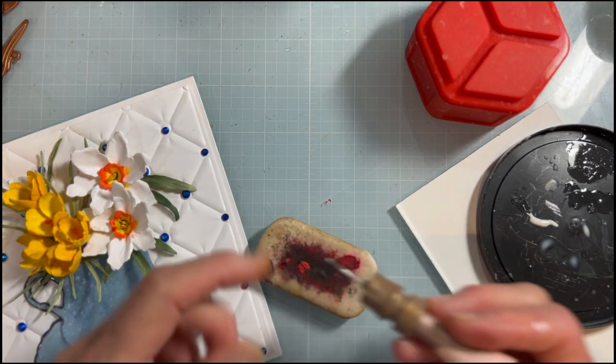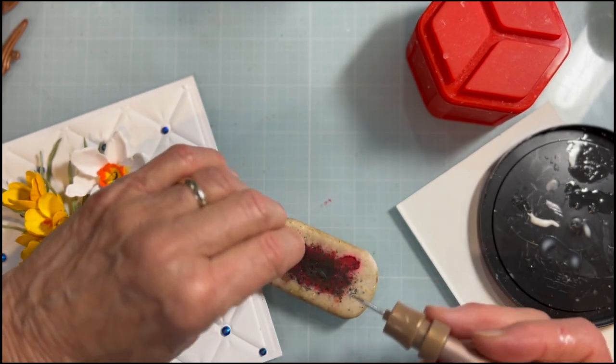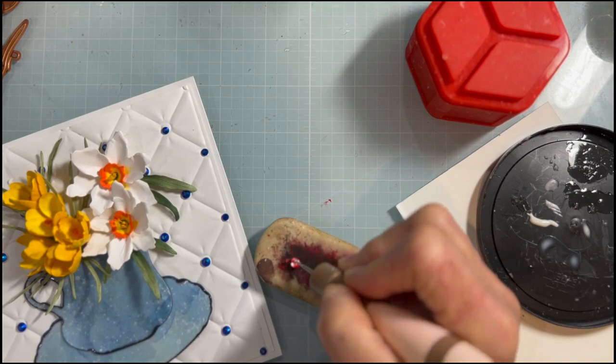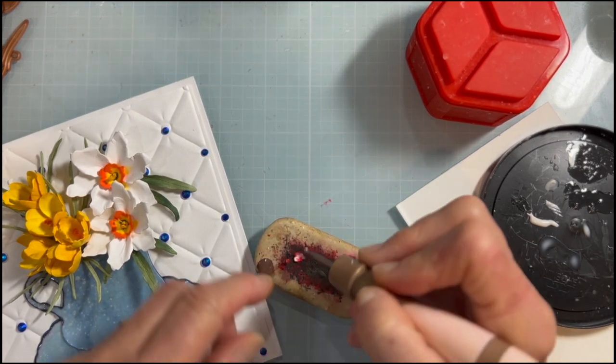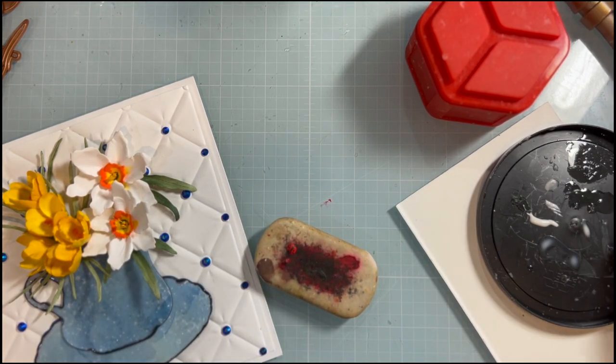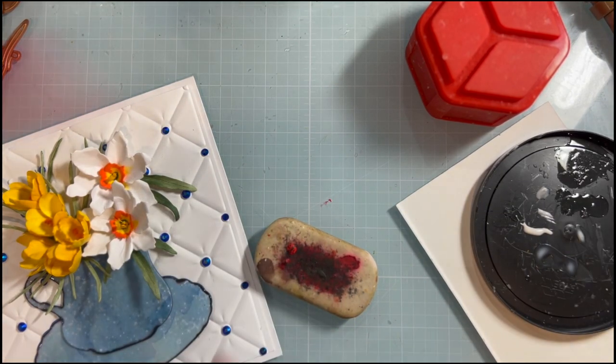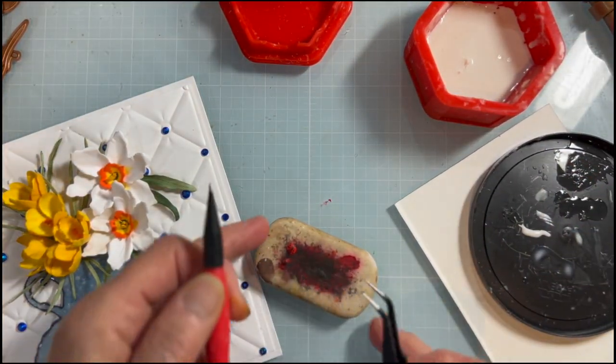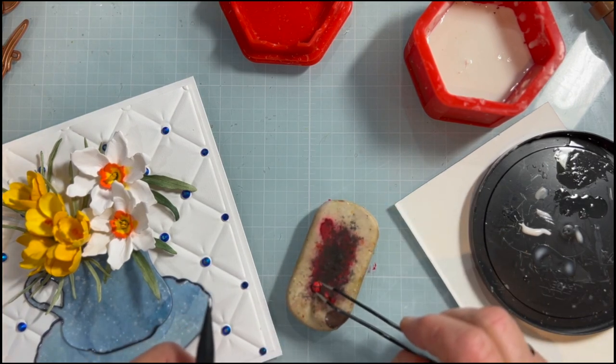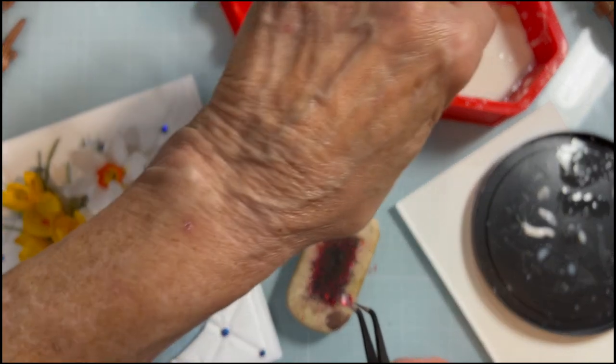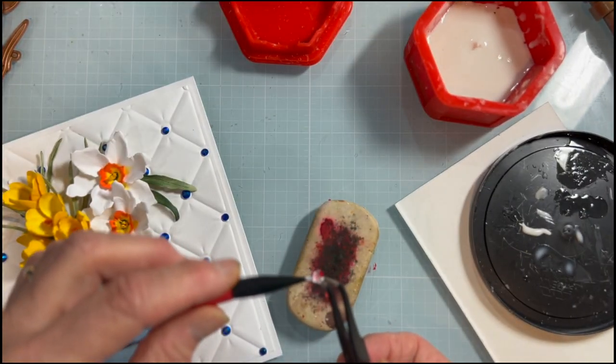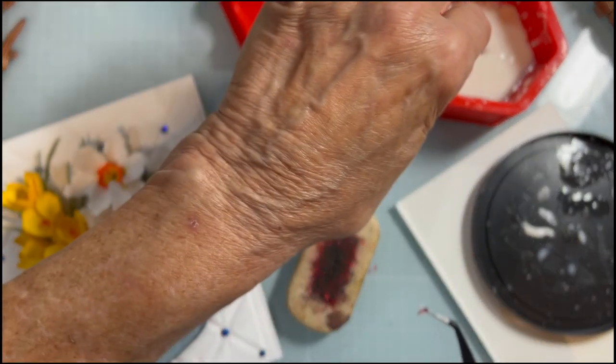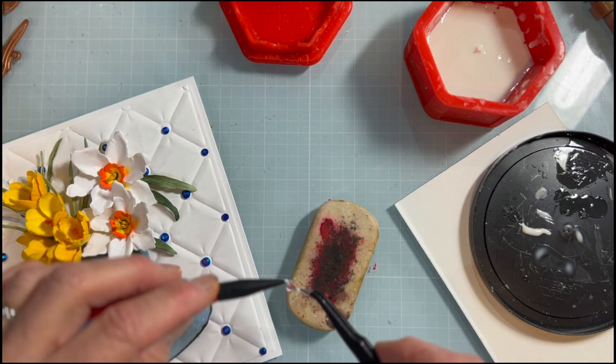You want to use your small ball stylus to give her some form, make her look nice and round and chubby here. Then let me grab a little bit of glue. Make sure underneath is covered here.